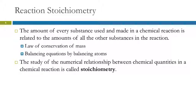The amount of each reactant — you can have two reactants, you can have more, or just one — is related to the amount of each product and other reactant. They are all interrelated. This goes back to the law of conservation of mass. We cannot have atoms being created or destroyed in a chemical reaction; they just get rearranged. When we balance the equation, we balance it by balancing the numbers of atoms.